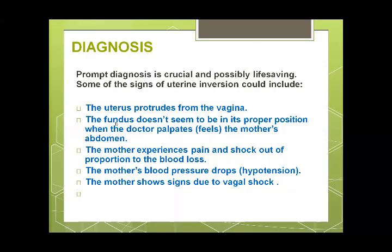Diagnosis: the uterus protrudes from the vagina, visible on vaginal examination. On abdominal examination, the fundus — which should normally be palpable around the level of the umbilicus after delivery as a round globular organ — is not felt in the abdominal cavity, raising suspicion of inversion. The mother experiences pain and shock out of proportion to blood loss — she is in vasovagal shock, not hemorrhagic shock. The mother's blood pressure drops mainly due to the vagal effect, not blood loss.